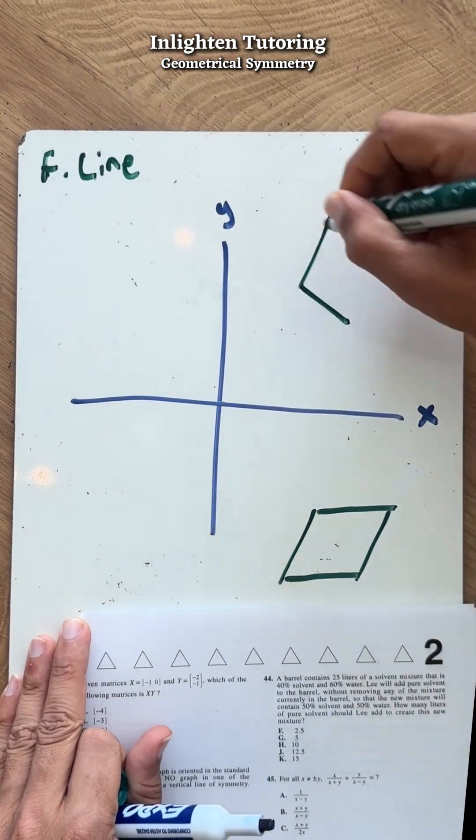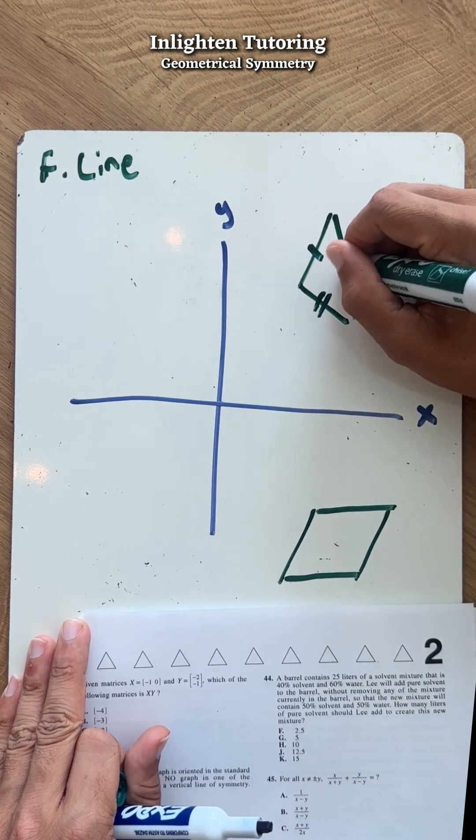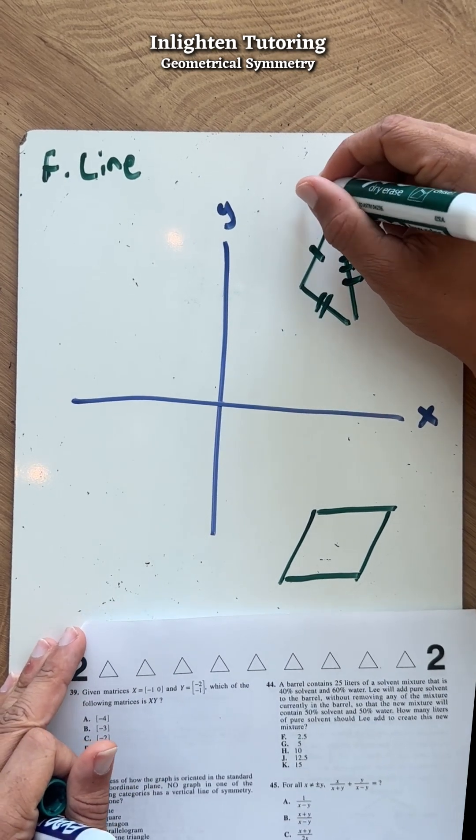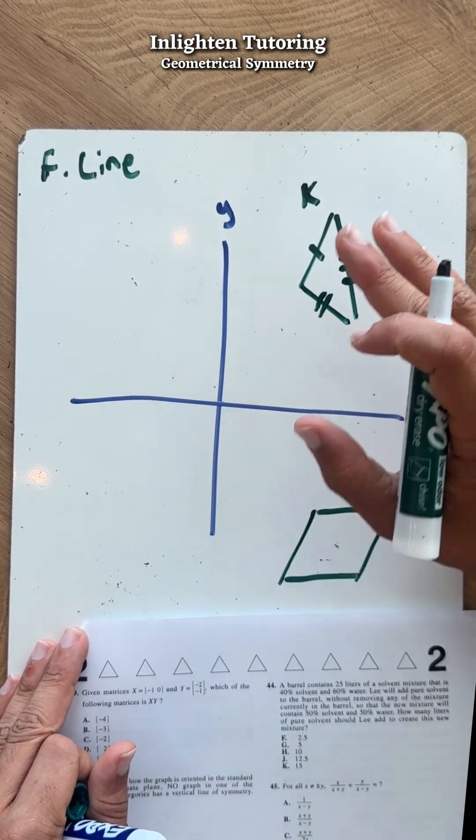A scalene triangle means that all three sides are different lengths, right? This is scalene. But would it have a vertical line of symmetry?